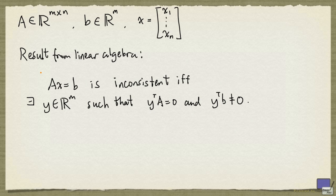Recall the following result from linear algebra. The system of linear equations Ax equal to b is inconsistent, that is, it has no solution, if and only if there exists an m-tuple y such that y transpose A is equal to the tuple of all zeros, and y transpose b is not equal to zero.